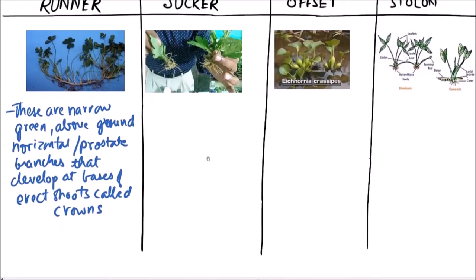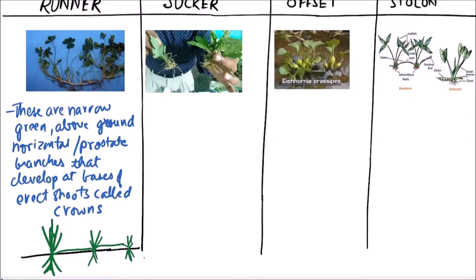If the main plant has roots and shoots, branches will come out. They will move horizontally and at the nodes they will again give shoots and roots, and then continue this process further, again giving roots and shoots. So this is a Runner.